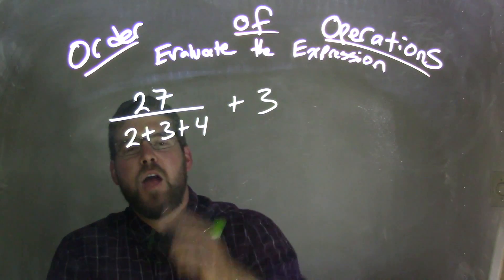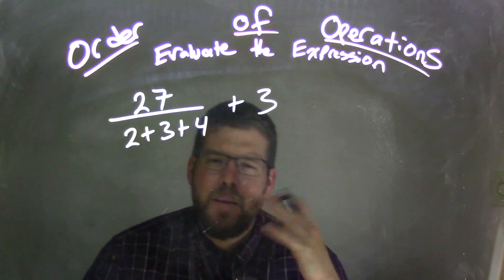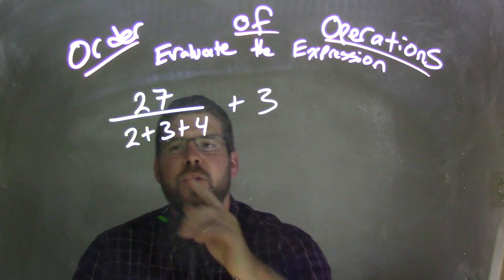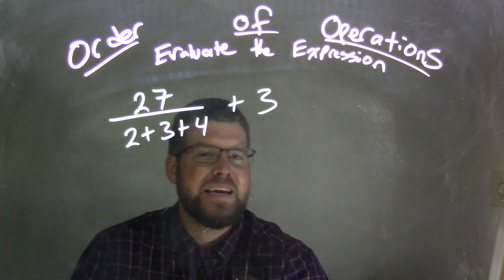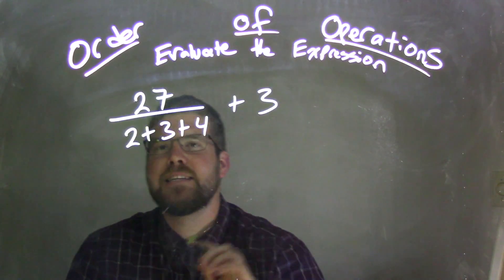We have the fraction here, and we need to deal with what's in the denominator of the fraction. So maybe now we're getting a little more comfortable with it. What's 2 plus 3 plus 4? Well, 2 plus 3 is 5, plus 4 brings it all together to get 9.